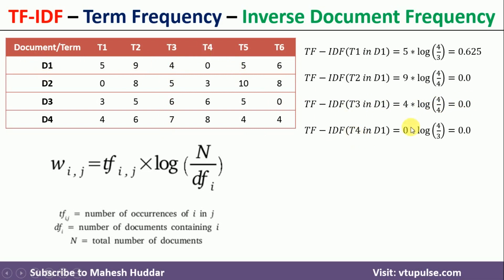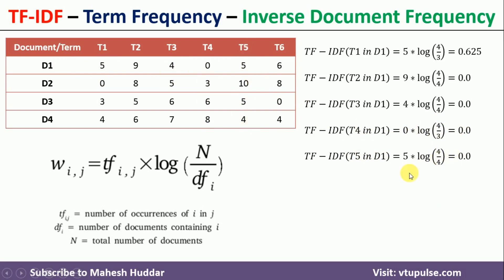For T4 in D1: it appears 0 times in D1, so TF-IDF = 0 × log(4/3) = 0. For T5 in D1: frequency is 5, but T5 is present in all four documents, so TF-IDF = 5 × log(4/4) = 0. For T6 in D1: frequency is 6, and T6 is present in 3 documents, so TF-IDF = 6 × log(4/3) = 0.7496.